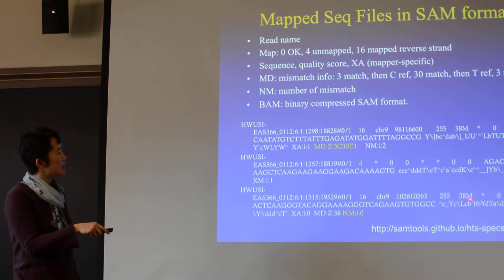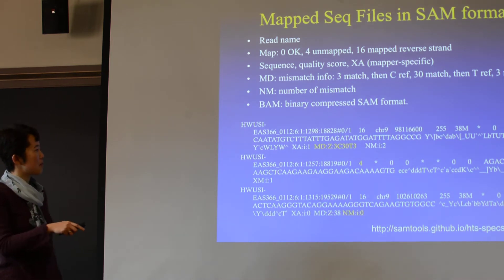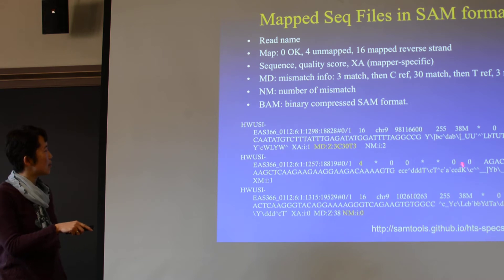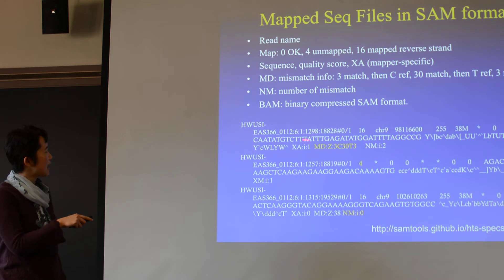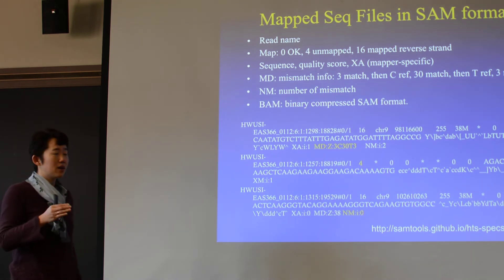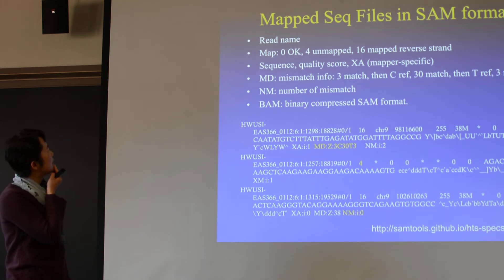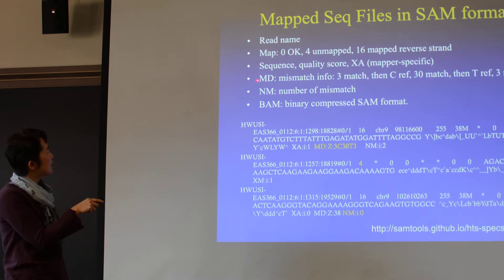The '38M' match means it's a sequence of 38 nucleotides and all of them match. This is the actual sequence, and this is the quality score. The SAM file really has all the information — it's a smaller file but captures more information than FASTQ. The XA tag is mapper-specific, but the MD tag is the actual mismatch information.